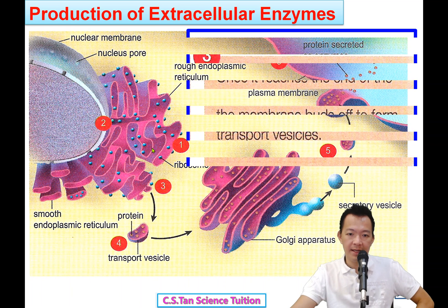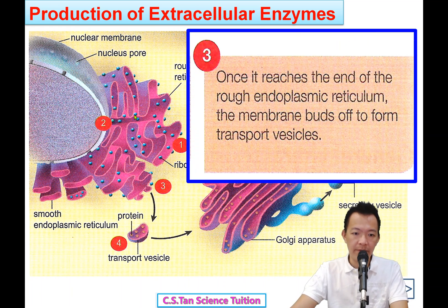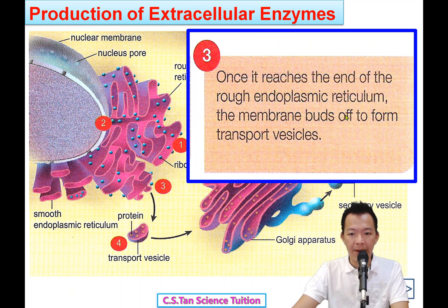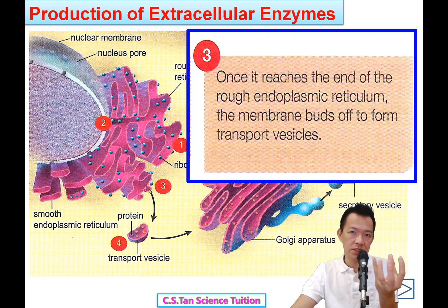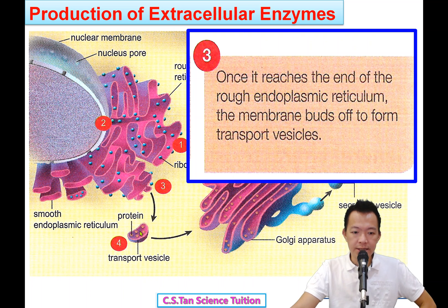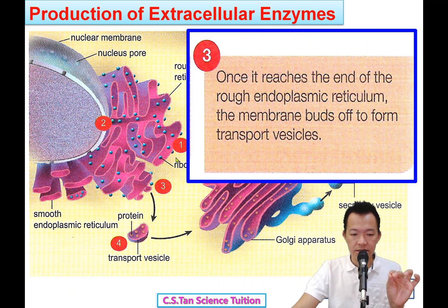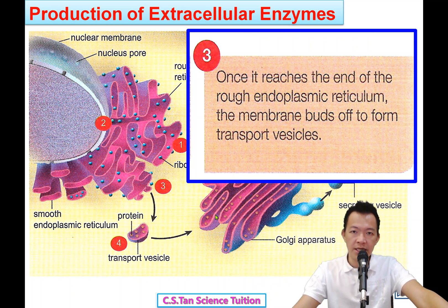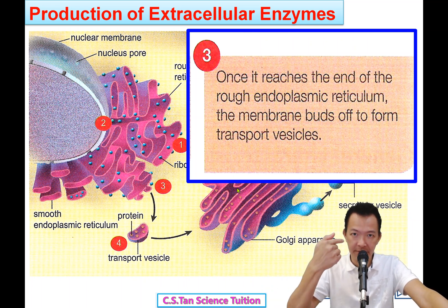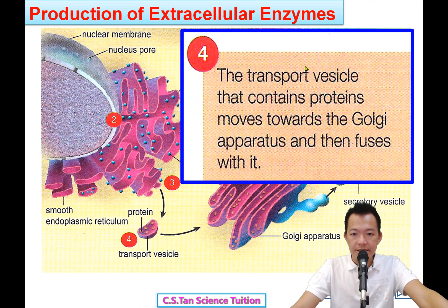Number 3: once the protein reaches the end of the rough endoplasmic reticulum, the membrane buds off to form a transport vesicle — 它就形成了一粒圆的小泡泡. This is what we call the transport vesicle. The transport vesicle then transports the protein to the Golgi Apparatus. The Golgi Apparatus is like a factory — a place to modify the protein and make it become an enzyme.